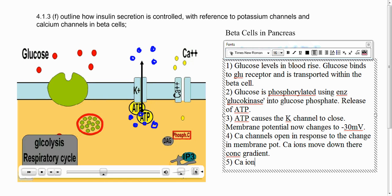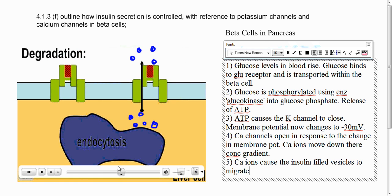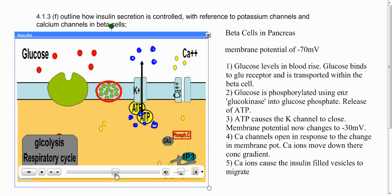The calcium ions cause the insulin-filled vesicles, which is this blob, the red circle over here with the green blobs inside, insulin-filled vesicles to migrate to the membrane where exocytosis occurs and insulin is released.